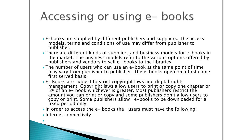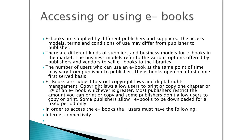There are different kinds of suppliers and business models for e-books in the market. Business models refer to the various options offered by publishers and vendors to sell e-books to libraries. The number of users who can use an e-book at the same point in time may vary from publisher to publisher, with e-books available on a first-come, first-served basis. E-books are subject to strict copyright laws and Digital Rights Management. Copyright laws allow users to print or copy one chapter or 5% of an e-book, whichever is greater.